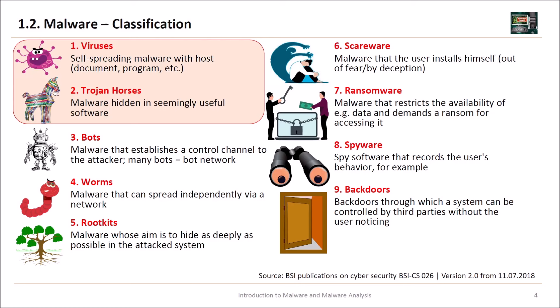Then we have Trojan horses — malware that hides in seemingly useful software. You download software thinking it is useful, but in the background it is a Trojan horse installing other malware. Then we have bots, which are malware that establish a control channel to the attacker. Many bots together form a bot network. Then we have worms — malware that can spread independently via a network.